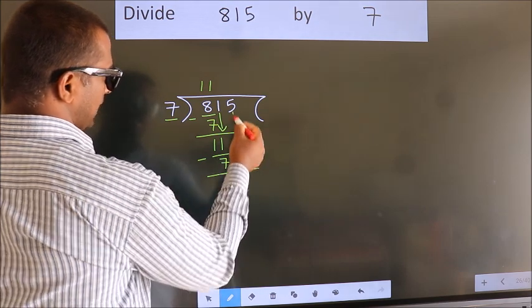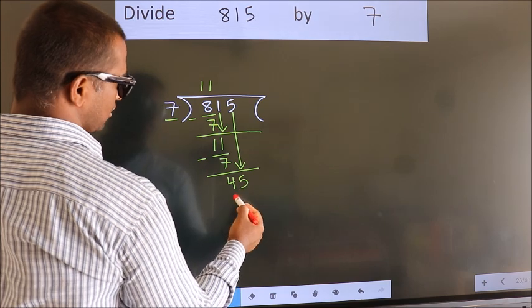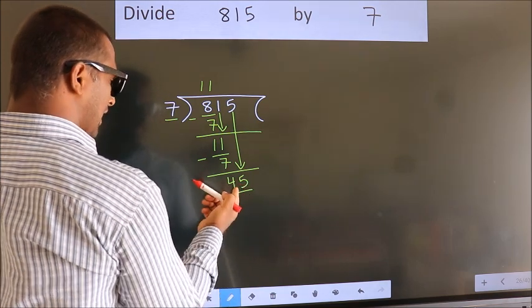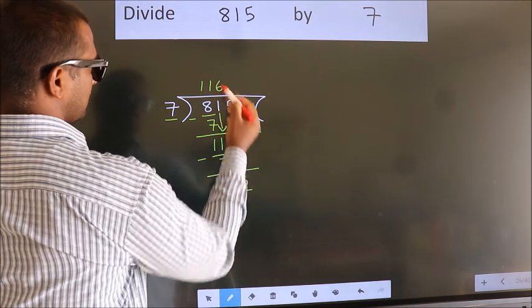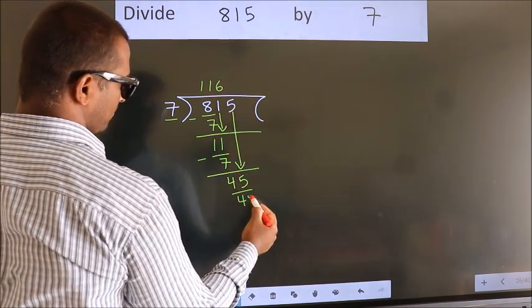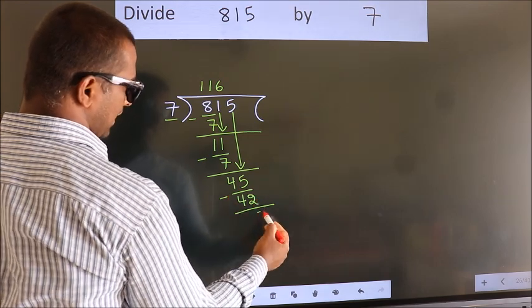After this, bring down the beside number. So 5 down. So 45. A number close to 45 in 7 table is 7, 6, 42. Now we subtract. We get 3.